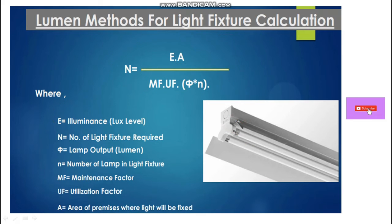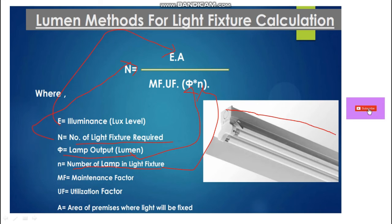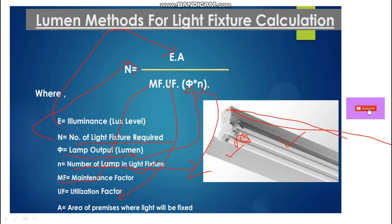E means illuminance — the lux level. N (capital) means the number of light fixtures required. Φ means lamp output in lumens. Small n means the number of lamps in one fixture — suppose this is one set fixture with two tubes selected, so small n equals 2. MF means maintenance factor and UF means utilization factor.